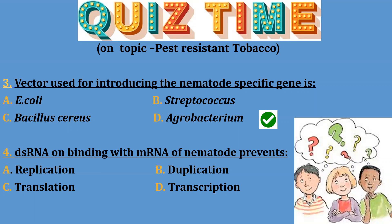Question 4: dsRNA on binding with mRNA of nematode prevents — Option A: replication; Option B: duplication; Option C: translation; Option D: transcription. The correct answer is Option C — translation. Translation is prevented because of silencing of mRNA.